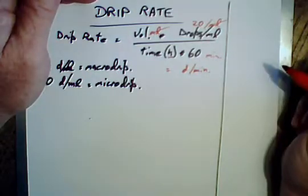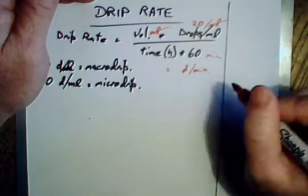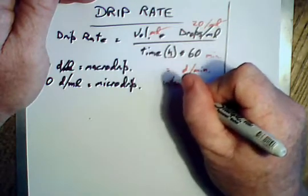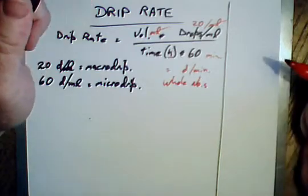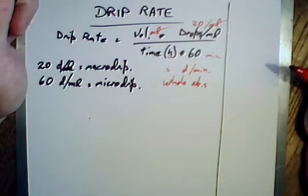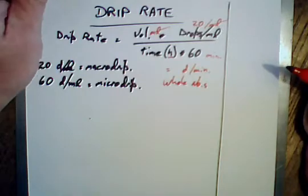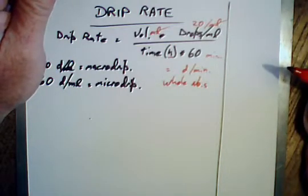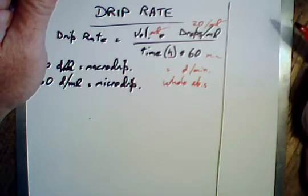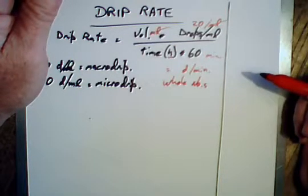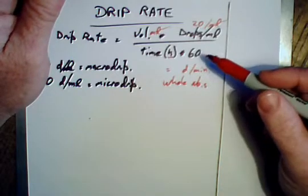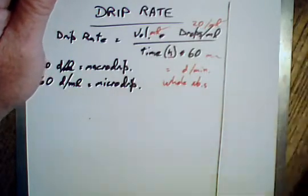I want you to know that we do that in whole numbers, because you're not likely to count half a drip in a minute. If it's 30.5, you round up when it's at the 0.5 mark. Anything below that you round down, so anything that we give has to be in whole numbers, otherwise it's just impractical.